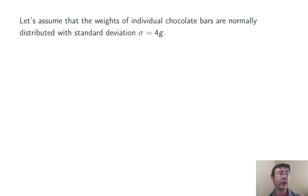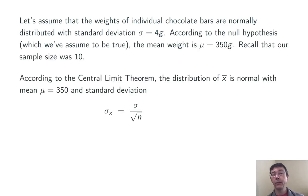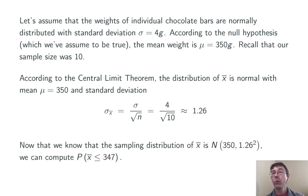Okay, let's assume in this case that we know the standard deviation for the chocolate bars that the company is producing. Let's assume it's 4 grams. Now, ultimately, that may not be a number that we actually know, and so in future videos, we're going to have to figure out what to do when we don't know a population standard deviation, but that's a problem for another day. According to the null hypothesis, the mean weight is mu equals 350 grams, and according to the central limit theorem, the distribution of X bar is going to be normal. So, we now know everything about the sampling distribution of X bar. It's going to be normal with mean 350 grams, and standard deviation sigma over root n, 4 over root 10, or 1.26 about. So, we want to compute the probability of randomly getting a sample mean X bar less than or equal to the one we got, 347, just due to random chance in a normal distribution with this mean and variance 1.26 squared.